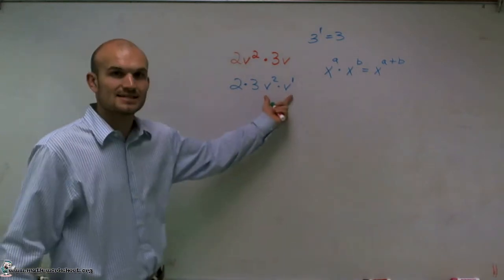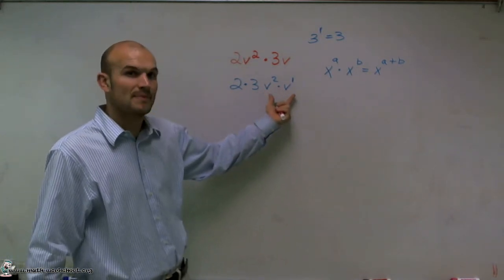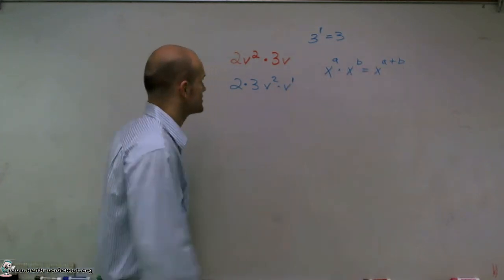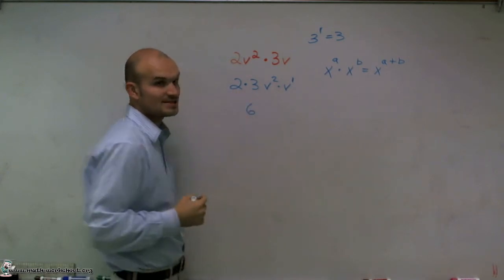So as long as my bases are the same, if I'm multiplying two numbers with the same base but with exponents, what you're simply going to do is add the exponents. So I can easily multiply my numbers, 2 times 3, which will give me 6.